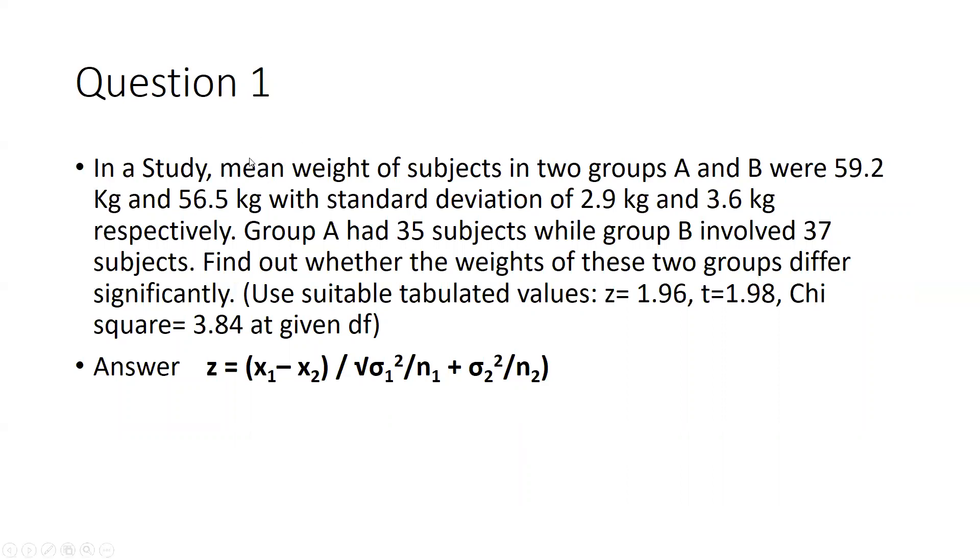Use suitable tabulated values: z = 1.96, t = 1.98, or chi-square = 3.84 at given degree of freedom. Here, because sample size is greater than 30 and second condition is standard deviation is known, that is why we are using this z-test.